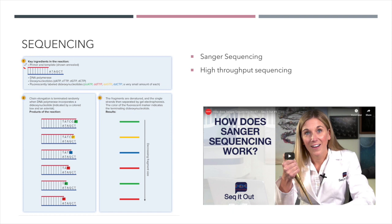We add an RNA primer — which would normally be added by primase — but we design the primer to a specific sequence. We add the template DNA that we want to sequence, DNA polymerase to synthesize new strands, and the deoxynucleotides A, T, C, and G. We also add a very small amount of fluorescently labeled dideoxynucleotides.